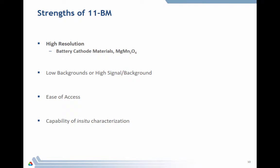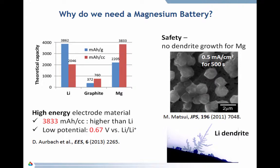So let me show you an example of some science where the high resolution was required. I'm going to talk about this battery cathode material, magnesium manganese oxide. Let me at least quickly mention why there's interest in magnesium batteries. One of the big ones is safety.